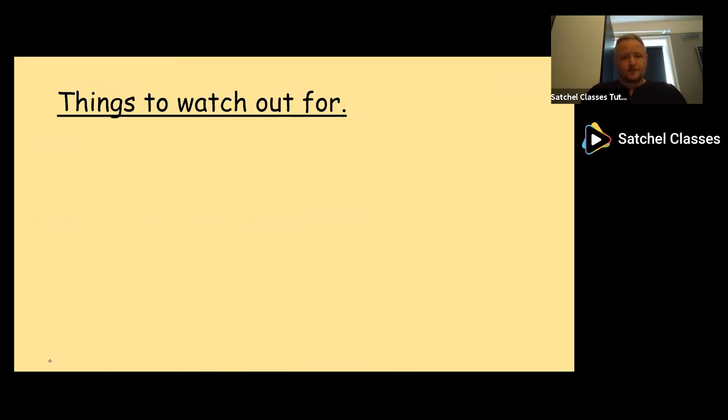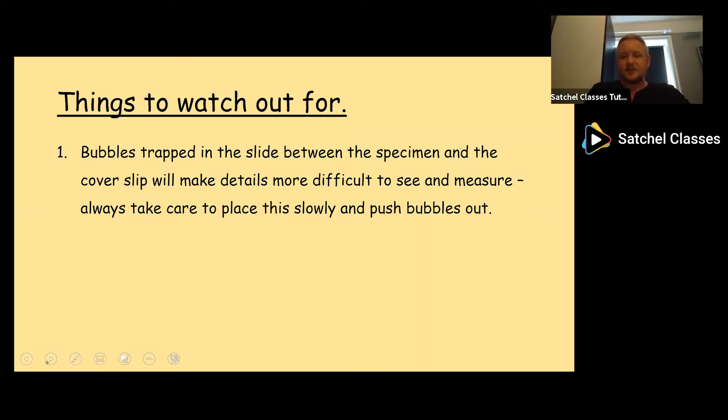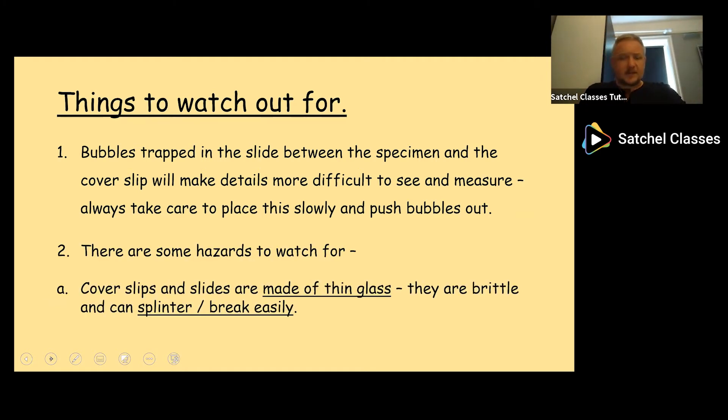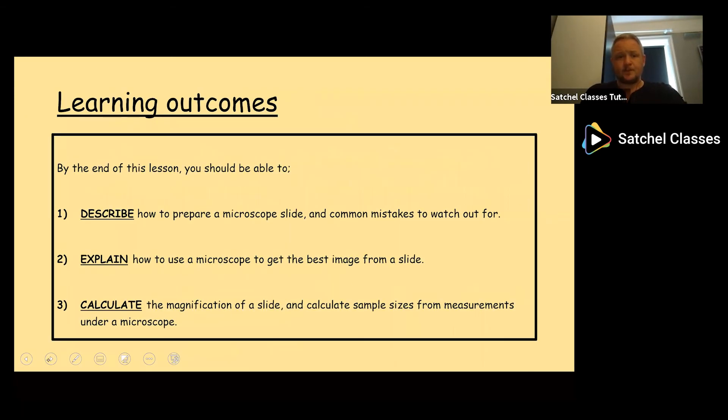Some things to watch out for. Bubbles trapped in the slide we've already mentioned. If it's between the specimen and the cover slip, you can still see the specimen most of the time under a microscope, but details you want to make clear are going to be obscured by the bubble. You won't be able to see them as easily and it makes it difficult to take measurements. If you put a slide under a microscope and there are bubbles there, you'll have to repeat the process of making the slide. Some hazards to watch for: cover slips and slides are made of thin glass, they are brittle and can splinter or break easily. Some chemical stains are toxic. These are things to watch for in terms of hazard management.